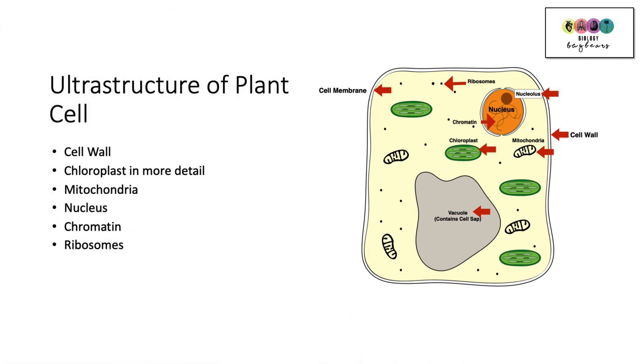So you see a lot more detail as well with the ultrastructure of the plant cell. You see the cell wall. You see the chloroplasts in much more detail. The mitochondria. You see the nucleus and the chromatin in that nucleus. The nucleolus as well. You also see the ribosomes where proteins are made. And also the large vacuole which contains that liquid called cell sap.